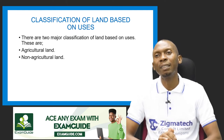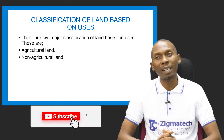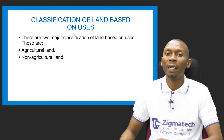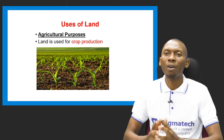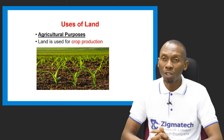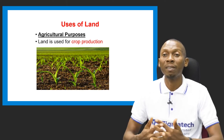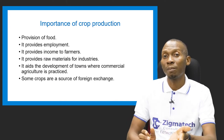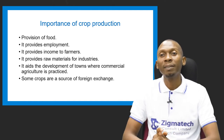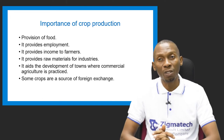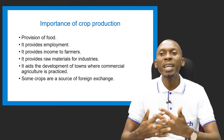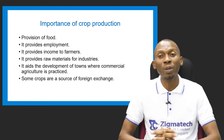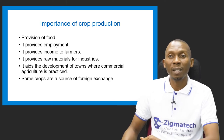Land can be classified based on use into agricultural and non-agricultural land. For agricultural use, land can be used for crop production — crops are grown on land. Crop production provides food, employment, and income for farmers, raw materials for industries, development of towns through commercial agriculture, and foreign exchange from the export of cash crops.